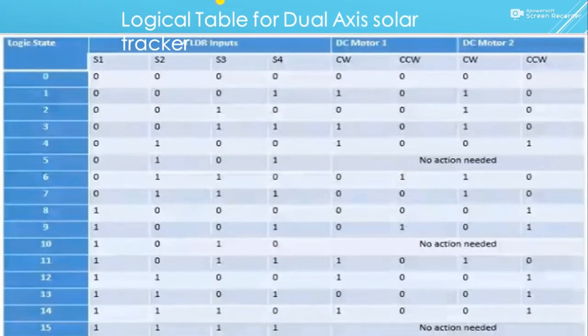In the next you can see that we have derived a logic table, and the rotation of motor 1 and motor 2 either in clockwise or in counterclockwise direction is completely dependent upon the sensor value. We have built this table according to our sensor adjustment. You can build your own table also.